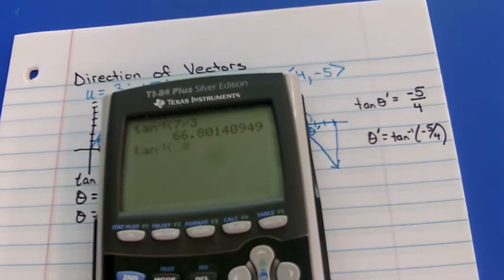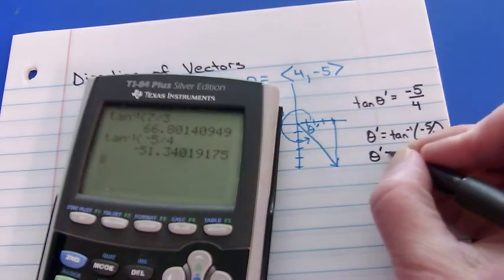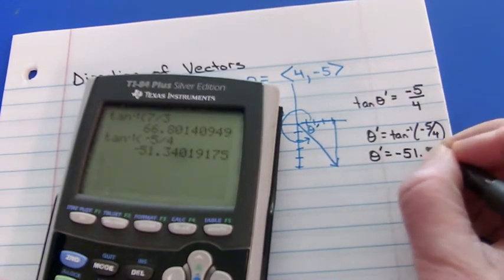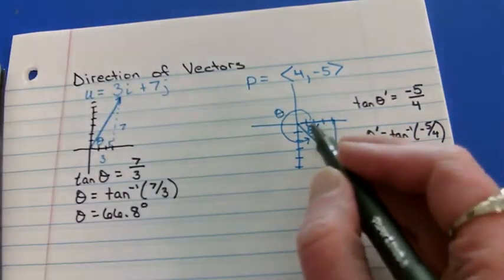And then I would have to do inverse tangent of negative 5 over 4. Inverse tangent, negative 5 over 4. And I get that the reference angle is negative 51.3.